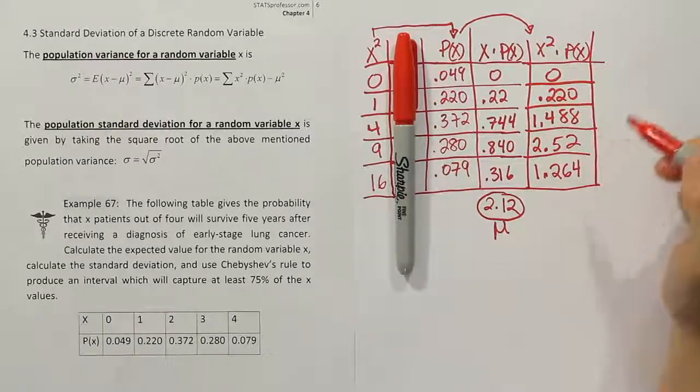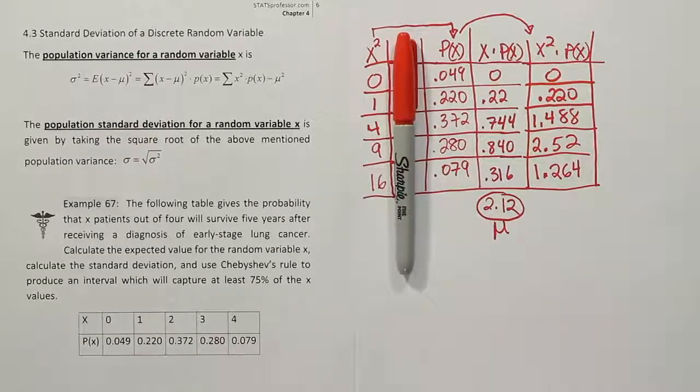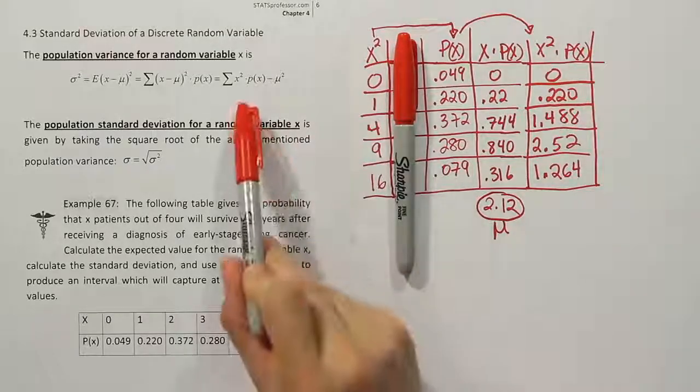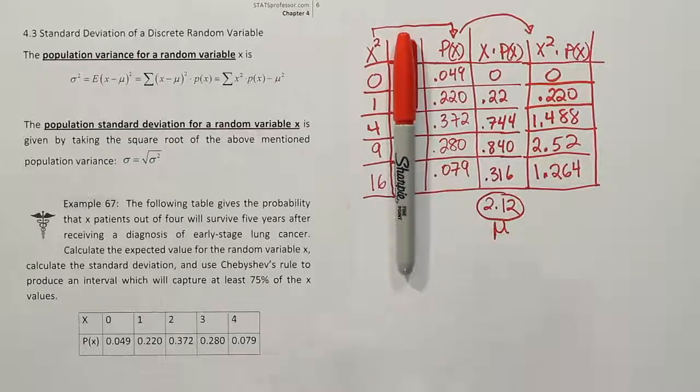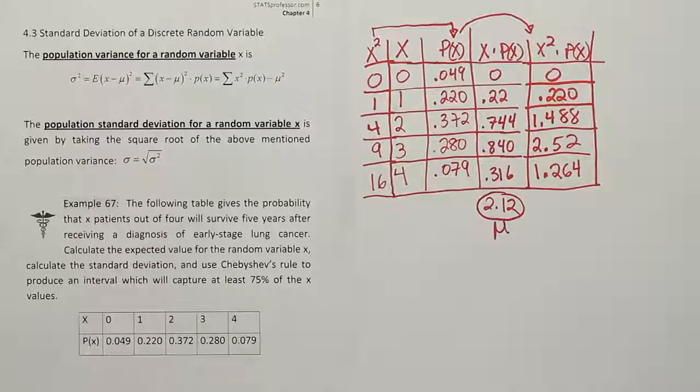Okay, so all that completed now gives you your X squared times P of X column. Now this says we should sum that, so we're going to add all those numbers together. Okay, so let's go ahead and do that next.